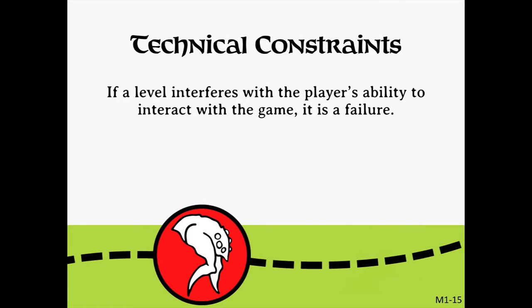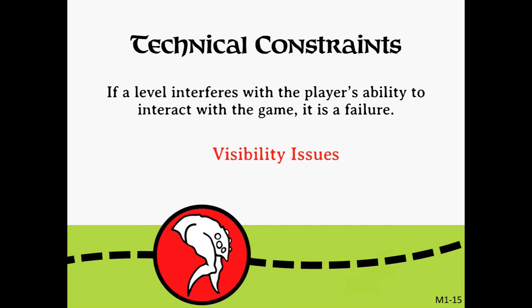No level design exists in a complete vacuum, because interactive media is limited by the hardware and software available to developers. So all game development exists in rigid confines that determine what is possible and what isn't. It's imperative that a level designer understand their technical constraints and work within them to bring their vision to life. Common problems that befall level designs are frame rate issues, problems with readability or navigation, unexpected bugs or glitches, and visibility issues. These can cause a player to walk away from a game forever. But part of the real genius of level design lies in taking ideas that seem impossible and finding clever ways of making them happen, even within the constraints of technology.